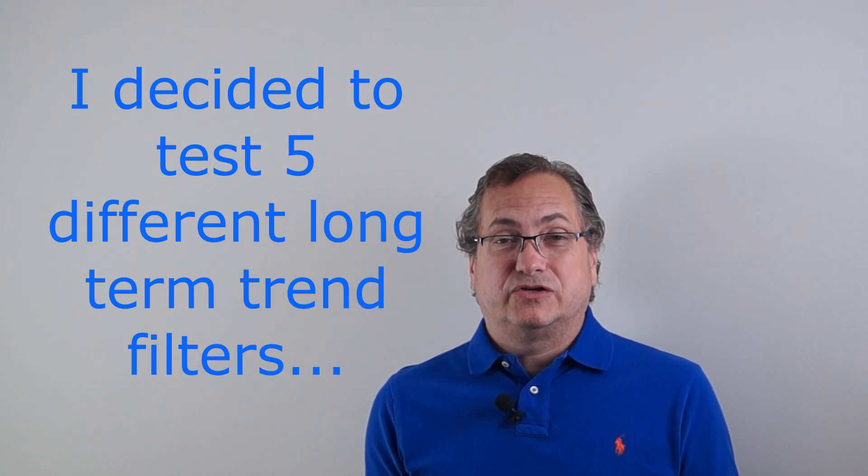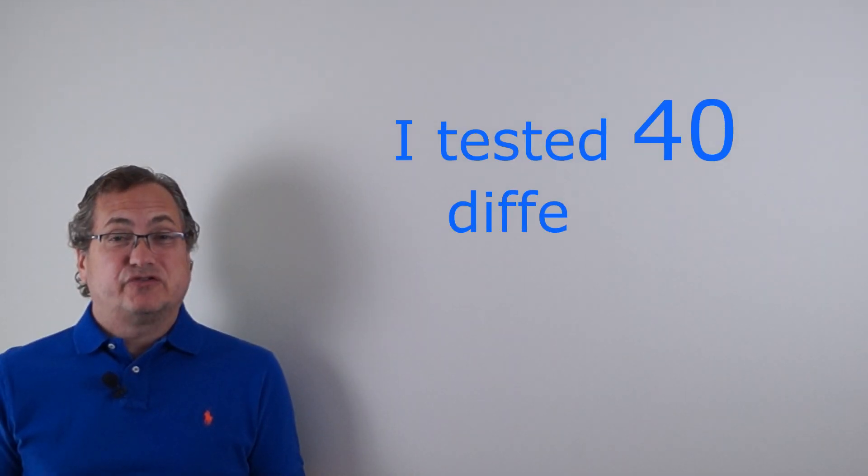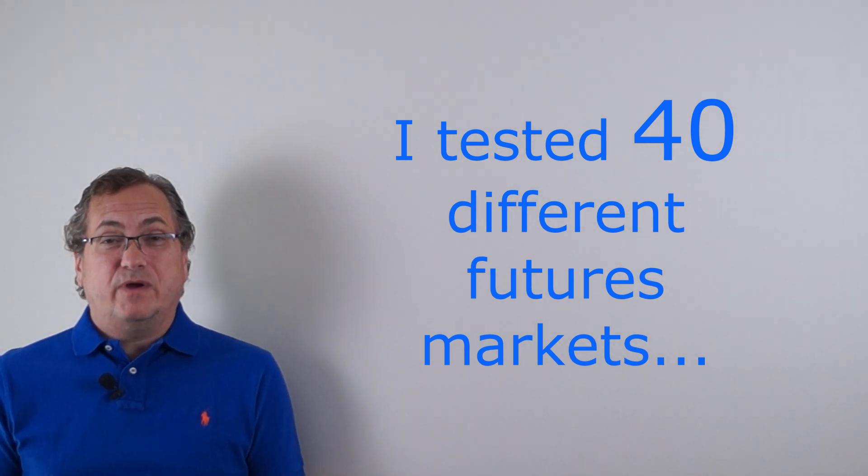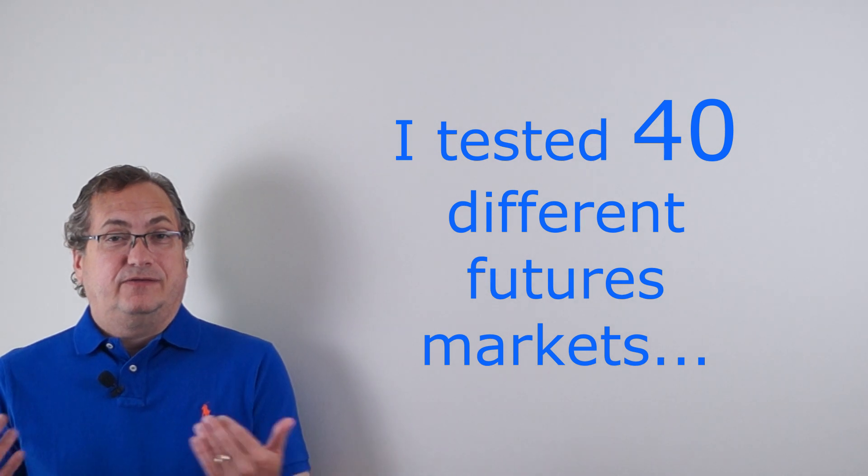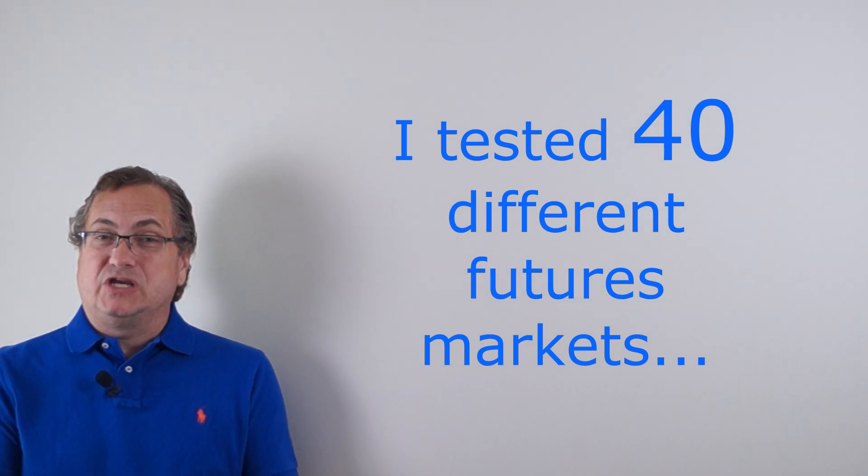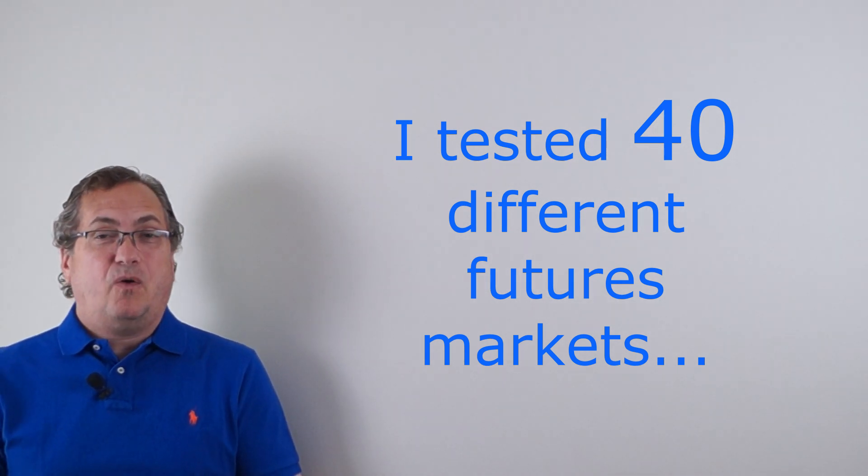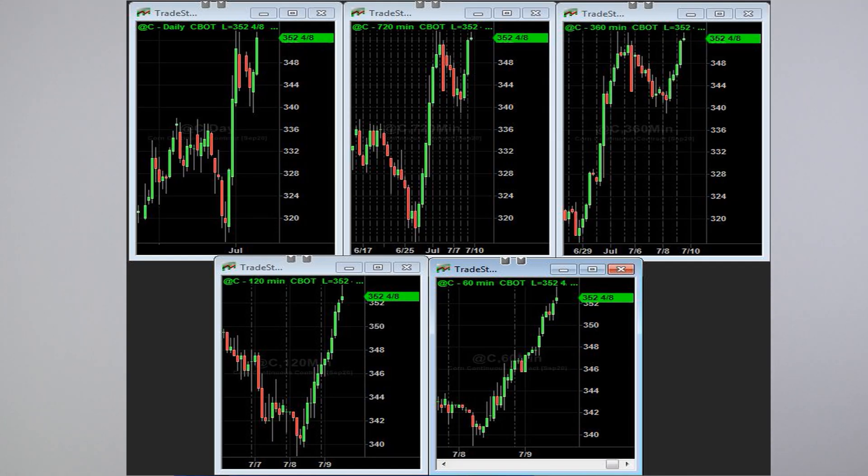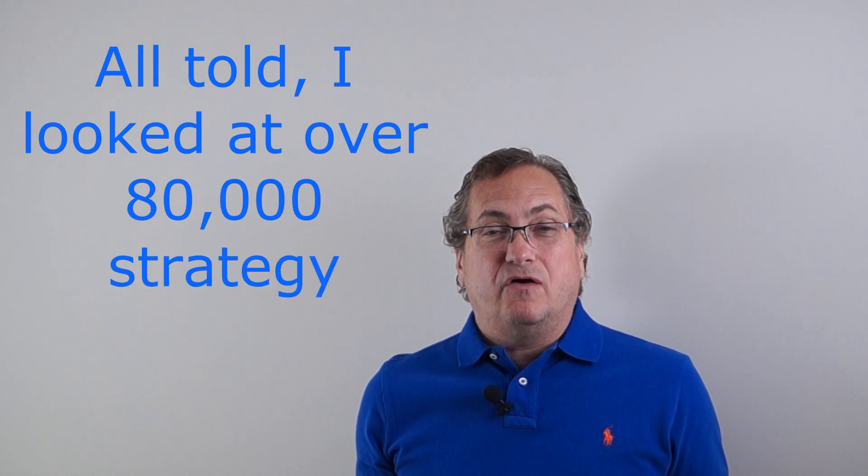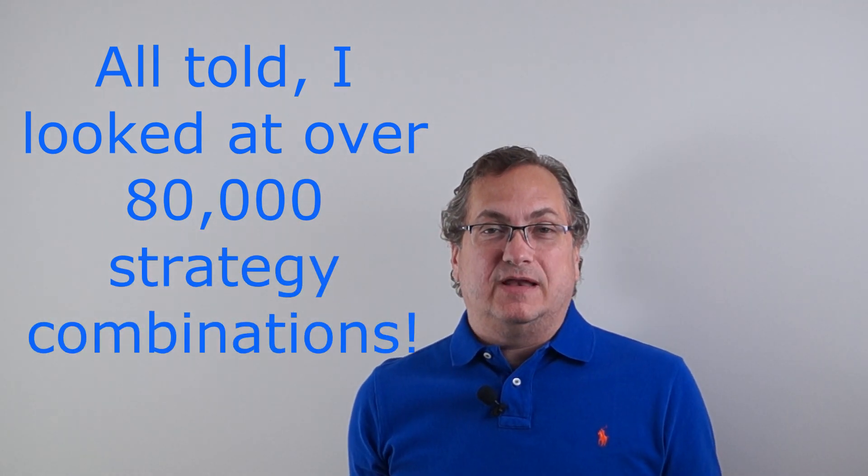So I looked at eight different strategies, a whole bunch of different filters, 40 different futures markets - everything from soybeans to gold to crude oil to wheat to the mini S&P to the euro currency. I looked at a whole bunch of different things and I also looked at different bar sizes: daily bars, 360-minute bars. Altogether I looked at over 80,000 different combinations of strategy parameters, markets, bar sizes, filters, and base strategies.